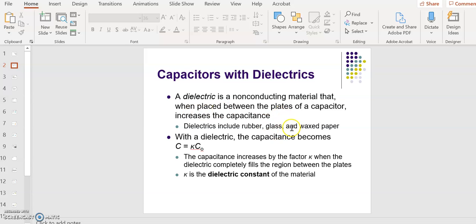Now some common dielectrics include various plastics, wax paper, rubber, glass, etc. Now the new equation is when you have a capacitor with a dielectric, its capacitance C becomes kappa times C₀. Now C₀ is the capacitance of the capacitor without a dielectric. And so you can see that if kappa is a number that's greater than one, then the capacitance increases for that capacitor. It increases by the factor kappa if the dielectric completely fills the region between the plates. Now this kappa is a material property, it depends upon the type of material that you put in between the capacitor plates. It's called the dielectric constant of the material.